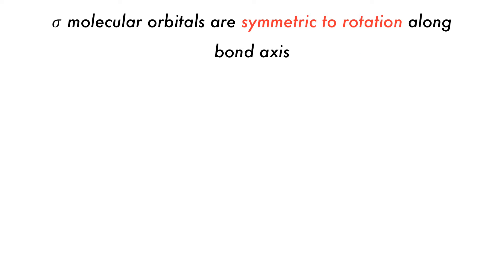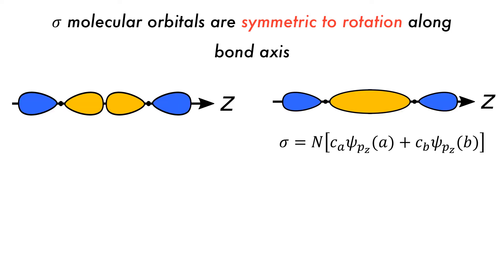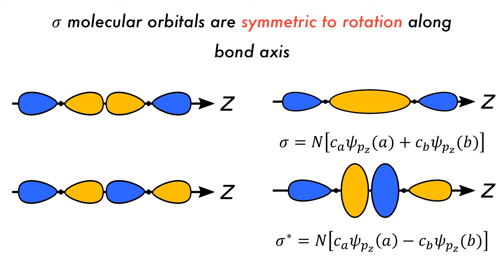Sigma bonds formed from p orbitals are formed in a similar manner. If there are two in-phase p orbitals, they will overlap to form a sigma bonding molecular orbital. If the two p orbitals are out of phase, the overlap will be destabilizing, giving a sigma-star antibonding orbital. Again, if these orbitals are rotated around the z-axis, they will not change, confirming that they are sigma orbitals.